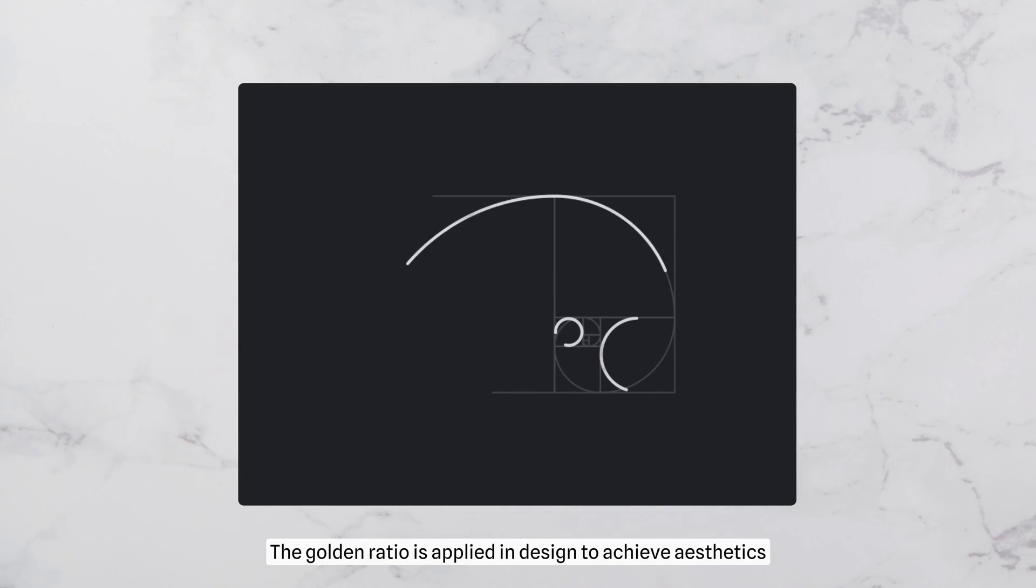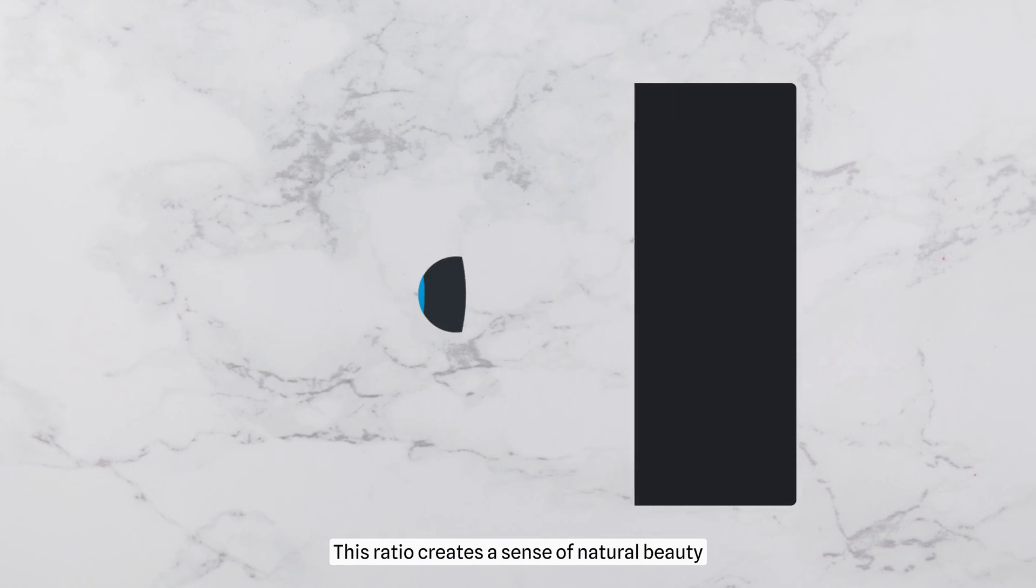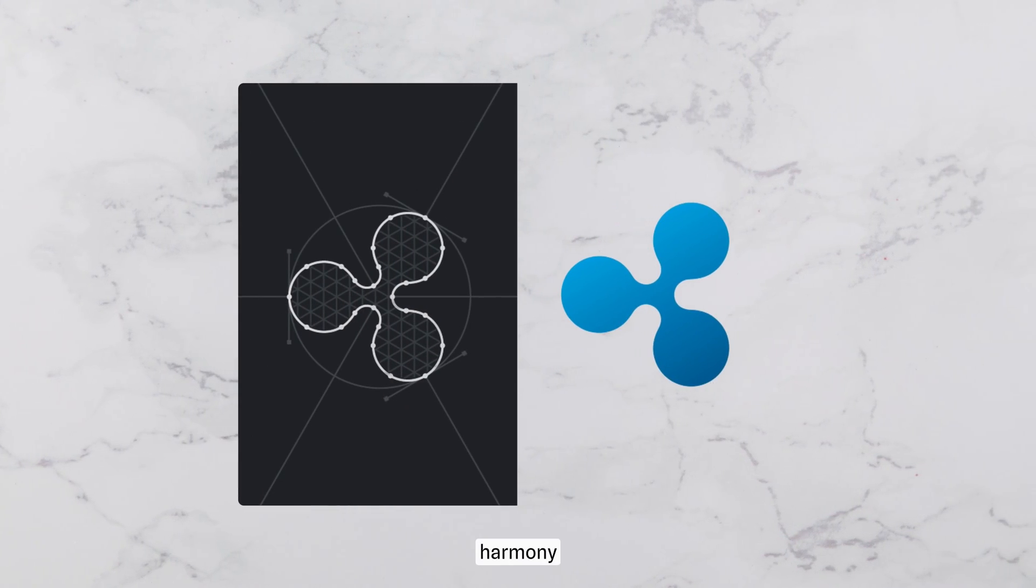The golden ratio is applied in design to achieve aesthetics. This ratio creates a sense of natural beauty, harmony, and proportion.